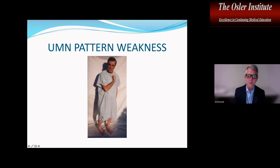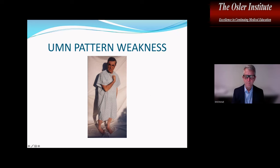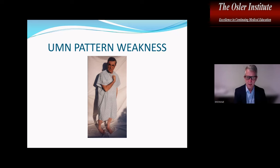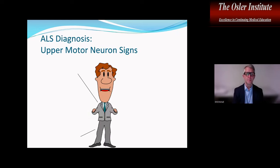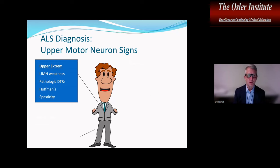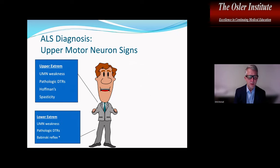In upper motor neuron lesions, the muscles that are more weak include the elbow extensors, wrist extensors, knee flexors, and ankle dorsiflexors. The hip abductors are also weaker than the hip adductors — that's why in cerebral palsy we get a scissoring gait, because the hip adductors pull the knees together and the weakened hip abductors can't counteract them. Other upper motor neuron signs include pathologic deep tendon reflexes, Hoffman sign, spasticity, and a positive Babinski reflex.